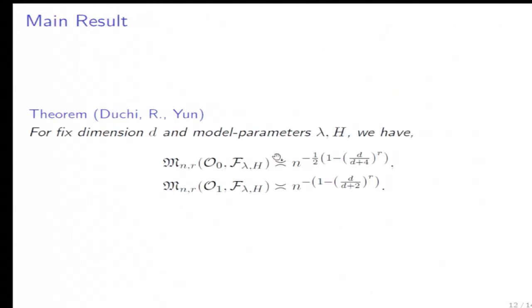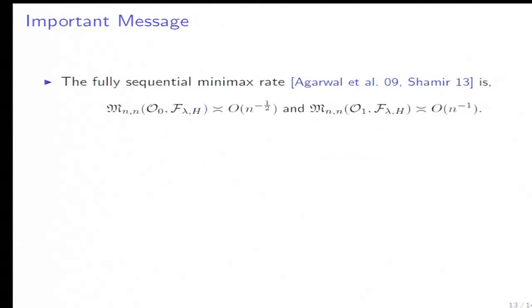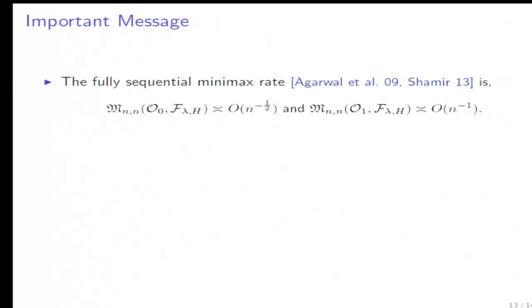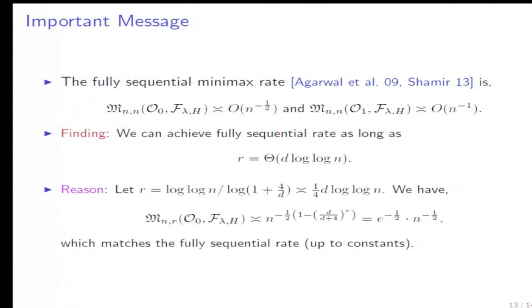The second more interesting remark is how minimax risk depends on the round r. Our result implies the following: previous results computed the fully sequential minimax risk where the number of rounds r equals the number of samples n, meaning each round is fully sequential. Our major finding is that as long as the number of rounds r is at least d log log n, you can achieve the fully sequential rate. This is because if you plug in r equals d log log n, our minimax risk is up to a constant equal to the fully sequential minimax risk. So d log log n rounds suffice to achieve the fully sequential rate.